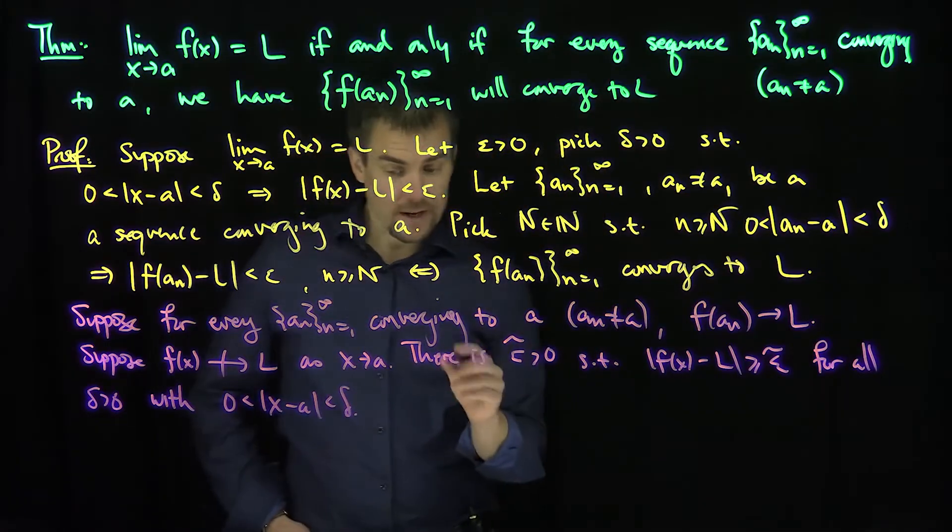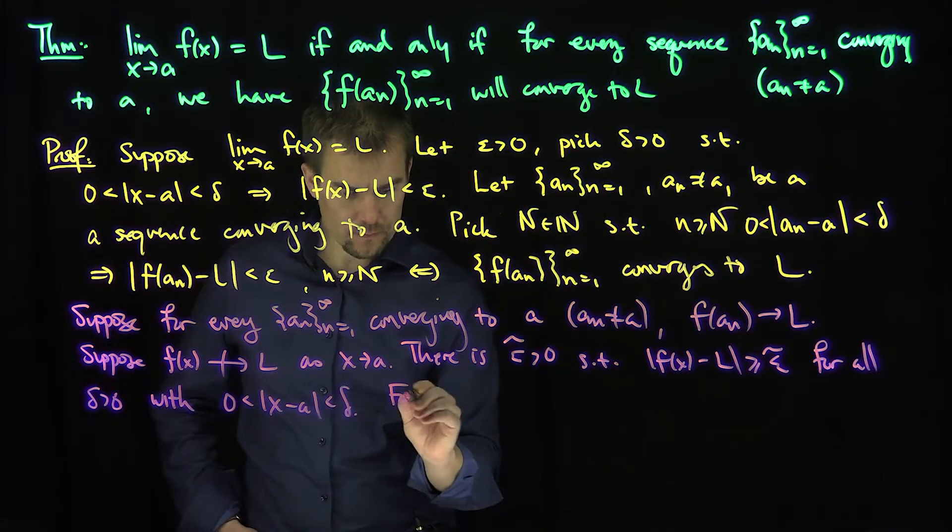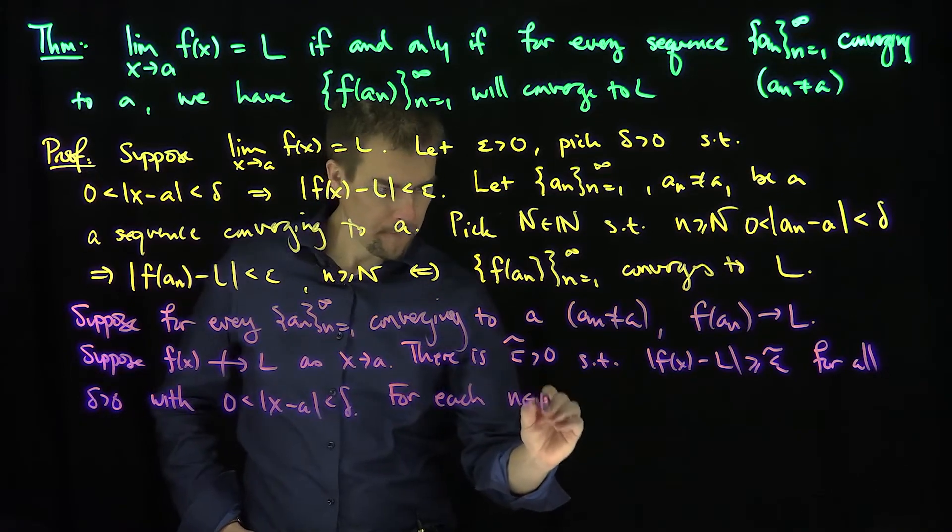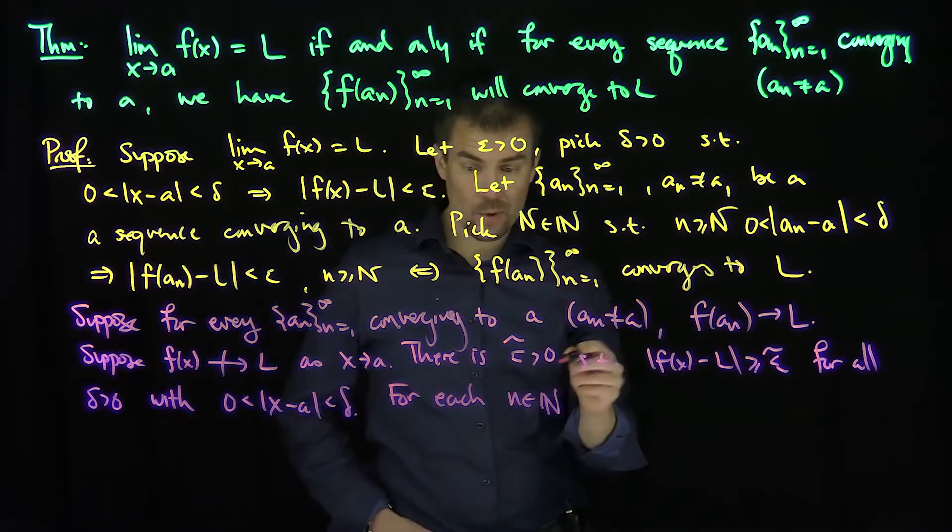for each n, we can select delta to be 1 over n,